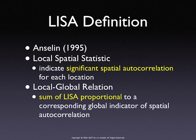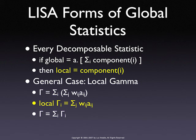I only talk about Moran's I here, but there is another statistic called Geary's C, which uses squared differences — same thing. Because of the double summation, you just take out the first sum and for every location you have a new statistic. The local Moran is a standardized measure of the sum of the neighbors — the sum over j of W_ij. And the global Moran is nothing but the average of the local Morans. So there is a very nice way to tie the two together.